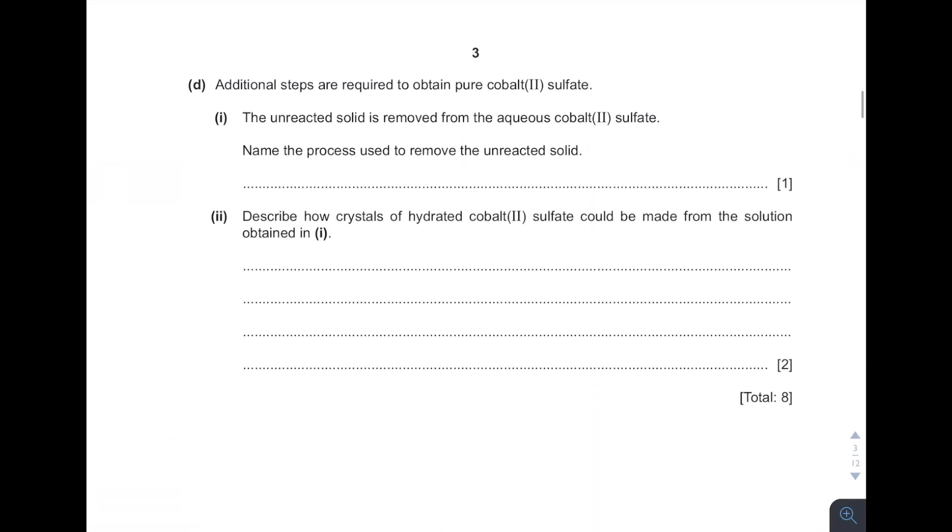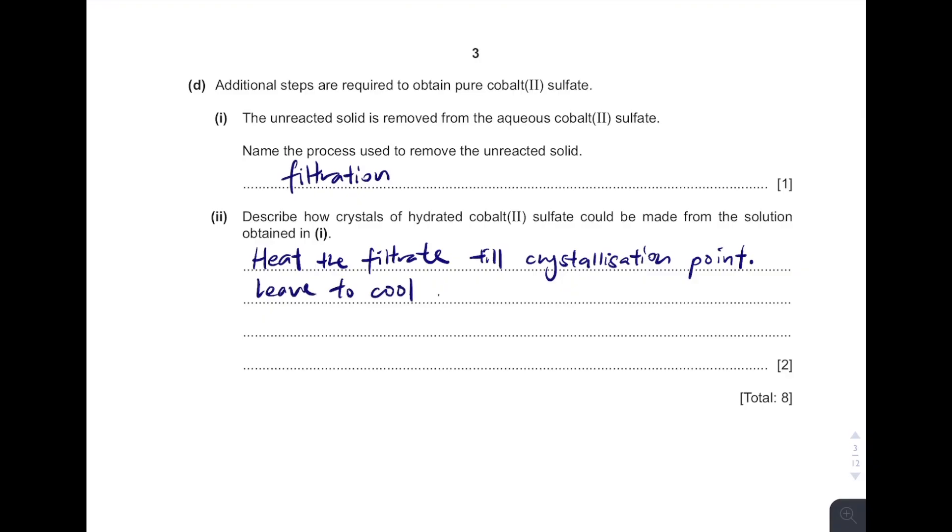Next one, give me the answer. Name the process used to remove the unreacted solid. It has to be filtration. And then describe how crystals of this hydrated cobalt 2 sulfate could be made from the solution. So first we have to heat the filtrate until crystallization point. And then we leave the solution to cool and evaporate. And eventually they will form crystal.